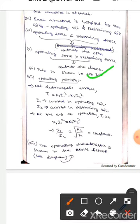The operating principle: net torque τ equals k1·i1² minus k2·i2². Here i1 is the current in operating coil, whereas i2 is the current in restraining coil. At the end of the operation, τ equals zero.